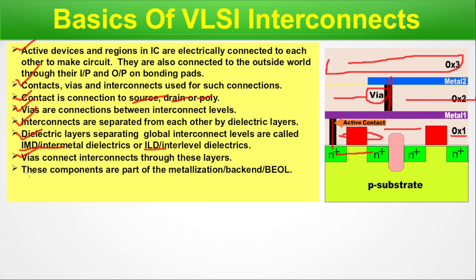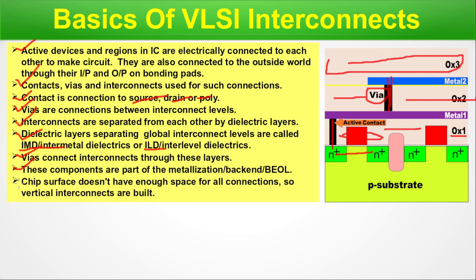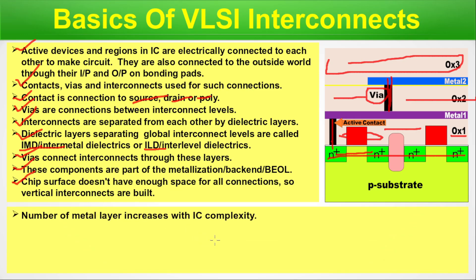BEOL is a very important concept. When a chip is fabricated, first the active regions are fabricated — that is the FEOL (front end of line). Then local connections are made, and finally the metallization process comes last — that is the back end of line. Chip surface doesn't have enough space for all connections, so vertical interconnects are built. Active regions are laterally fabricated on the chip surface, and connections are built on top. The number of metal layers increases with IC complexity.